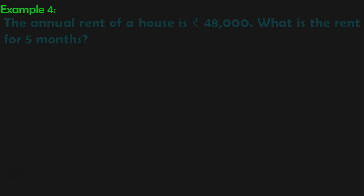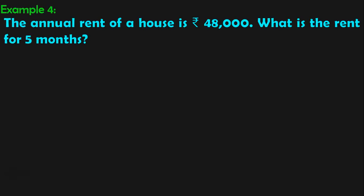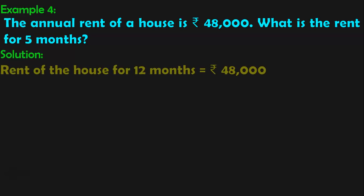Shall we do one more example? Example 4: The annual rent of a house is Rs. 48,000. What is the rent for 5 months? Annual means 12 months, so for 12 months the rent is Rs. 48,000. Let us write down the information given: rent of the house for 12 months is equal to Rs. 48,000. We have to find the rent for 5 months. By Unitary Method, the first step is to find the rent for 1 month by division.